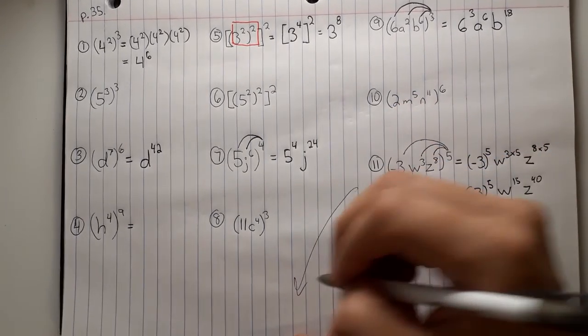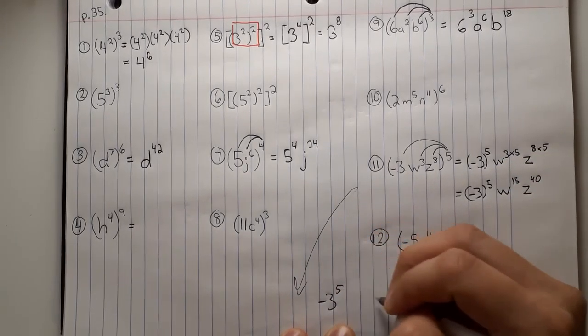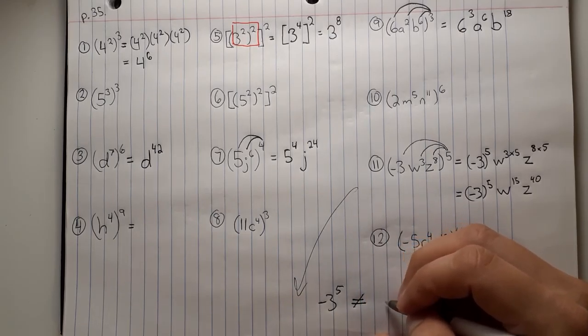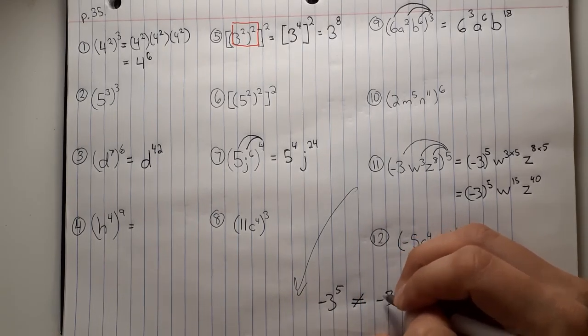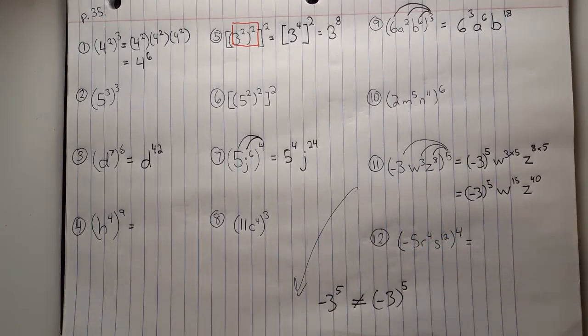And just as a quick side note, negative 3 to the power of 5 is not equal, or is not the same thing as negative 3 to the 5th with the 5 on the outside. You need to write the parentheses or it's not equivalent.